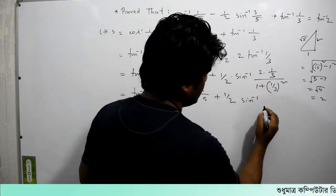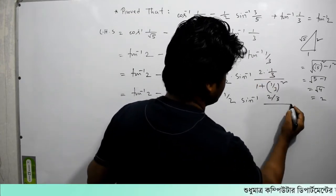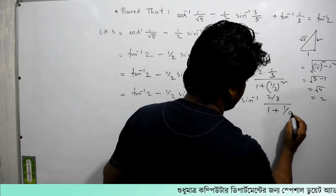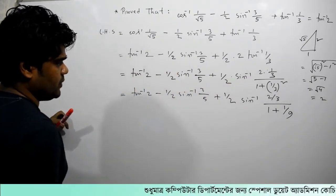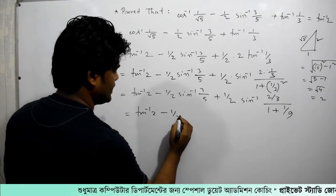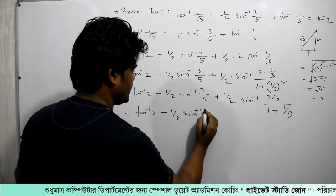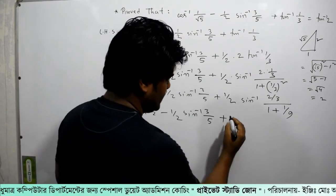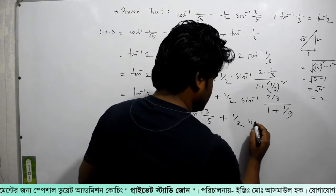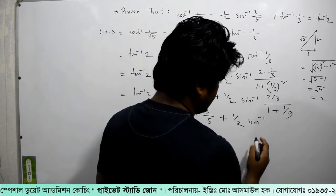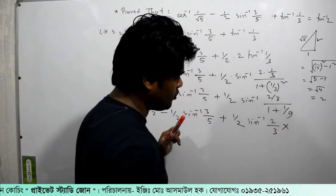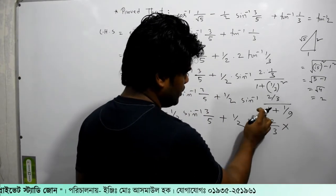Sine inverse — what is it? We have 2 minus 3, and 1 plus 1 by 9. So let's calculate: tan inverse 2 minus half, sine inverse 3 by 5 plus half. We have sine inverse with 2 by 3. The denominator becomes 9 and the other is 10. We take this and cut: 5 and 3. So we get 2 minus half sine inverse 3 by 5 plus half sine inverse.